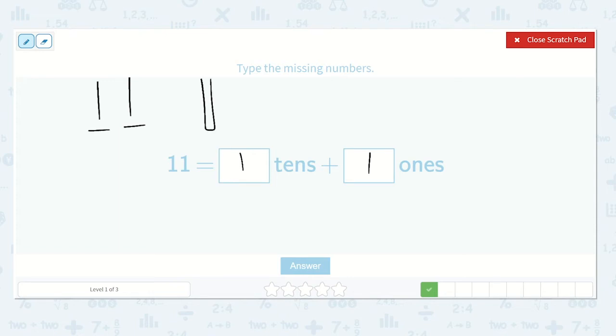Let's draw a picture. Here's our ten. One more than ten is 11. So one ten and one one.